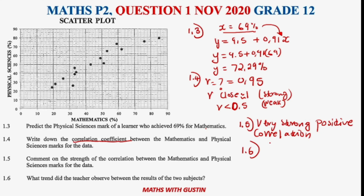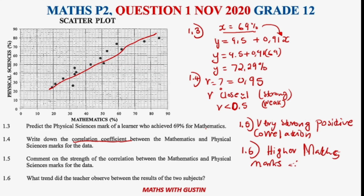Question 1.6 says: what trend did the teacher observe between the results of the two subjects? Looking at the graph, it is positively moving upward, so we can say: if a learner achieves a higher mark in mathematics, that learner would also tend to get a higher mark in physical science. In other words, if a person is good in mathematics, they are most likely to be good in physical sciences as well.